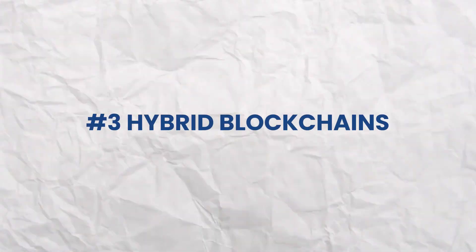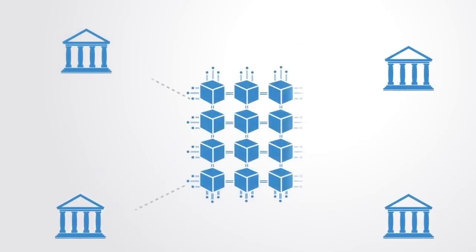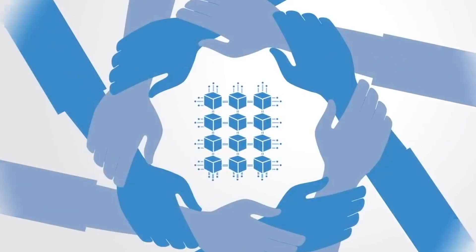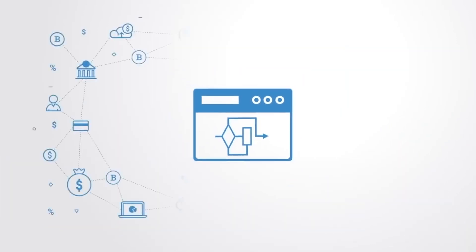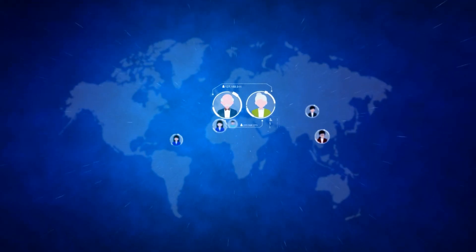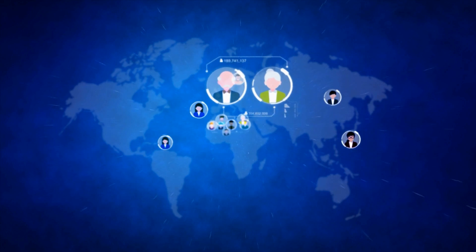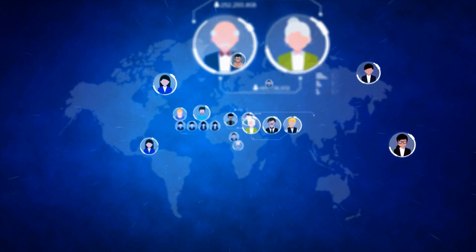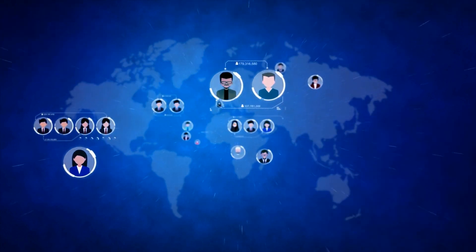Number three: hybrid blockchains. Hybrid blockchains combine elements of both centralized and decentralized systems. The specifics of how they operate can vary, depending on the mix of centralized and decentralized features they incorporate. This type offers a balance between the openness of public blockchains and the control of private ones.